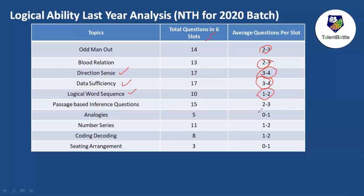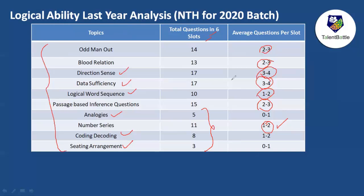Numeric/number series will give one to two questions. Topics like analogy, sitting arrangement, and coding-decoding had fewer questions last year. These are the topics to focus on for Wipro logical ability — odd-man-out, blood relations, directions, data sufficiency, logical word sequence, and passage-based inference are the highest priority.